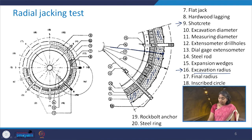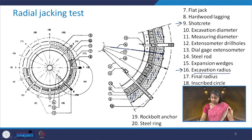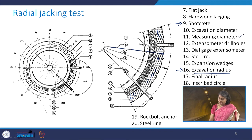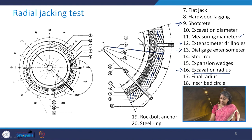Component 11 is the measuring diameter. Components 12 and 13 are the extensometer drill holes and the dial gauge extensometers respectively. Component 14 is the steel rods which are provided.